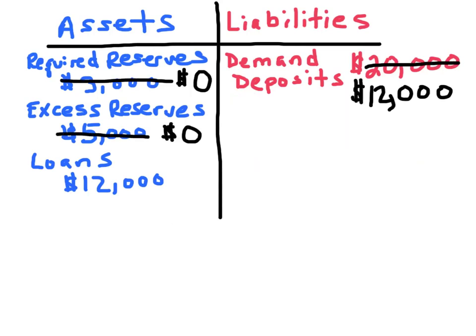This is what the sheet looks like right after you take out that $8,000 from your checking account. Demand deposits are down to $12,000, and the reserves are gone because the bank paid you. So the $12,000 in demand deposits equals the bank's loans of $12,000. The next step is that this bank needs to borrow 15% of $12,000, which would be $1,800, to meet the reserve requirement.